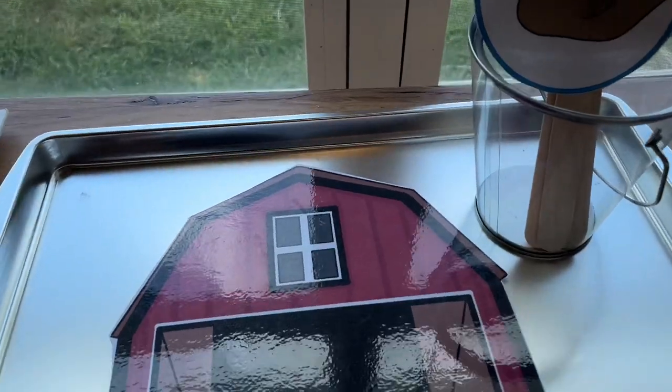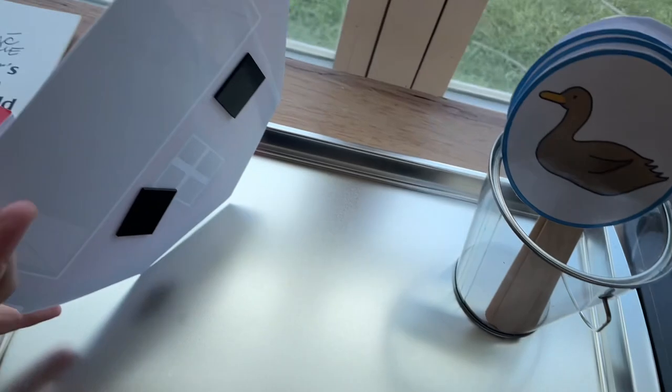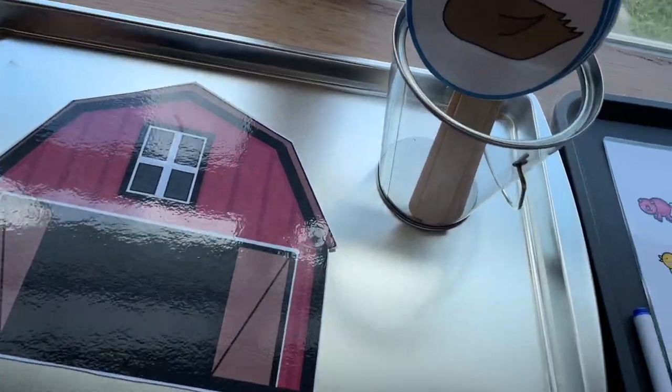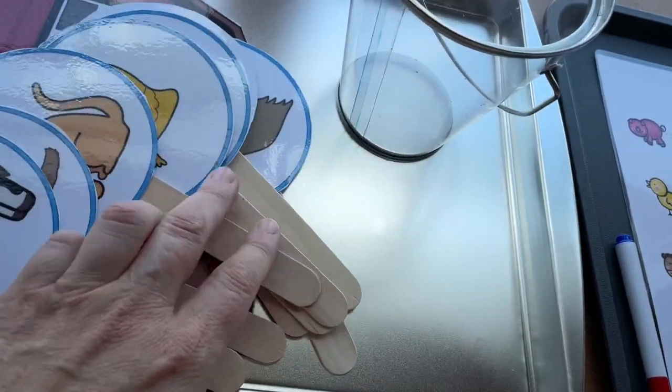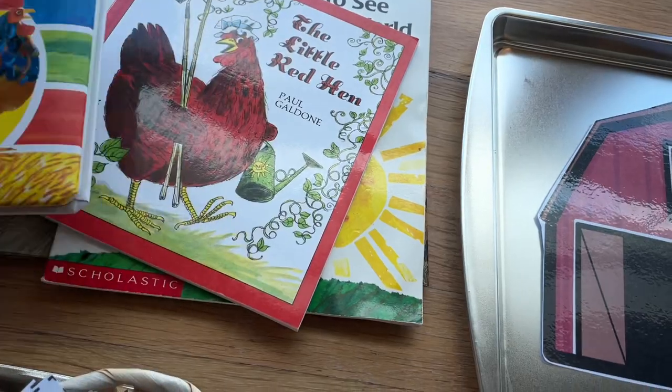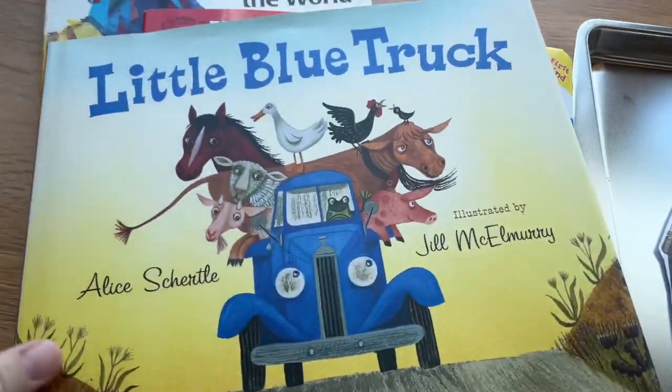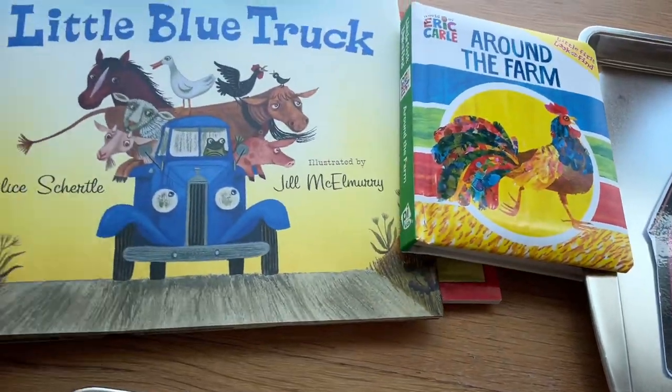I really need to pick up my circle time game. So I'm going to bring out this cookie tray and I put a magnet on the back of our barn, and then here are our props for Old McDonald's. So that's the song that we're going to be working on. And then also I have some books that we'll be reading too. Little Blue Truck, the kids love that, and some Eric Carle books and then The Little Red Hen.